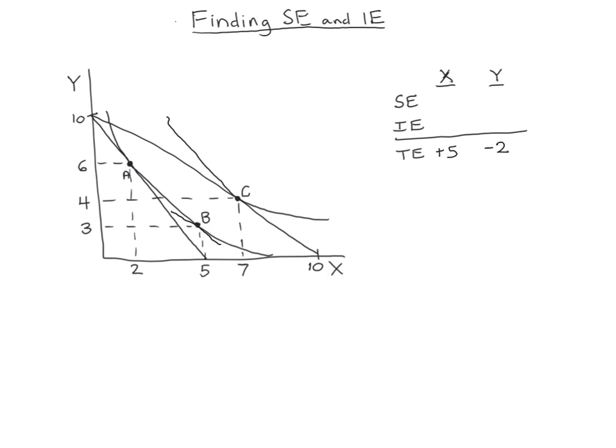And that's why I think this table is helpful to organize. You're going to see these a lot in section and on the problem sets, where you'll fill in your substitution and income effects. The table makes it clear that there's going to be a substitution effect for each of y and x, the same for income effects. And then the sum of those two will add up to give us our total effect.